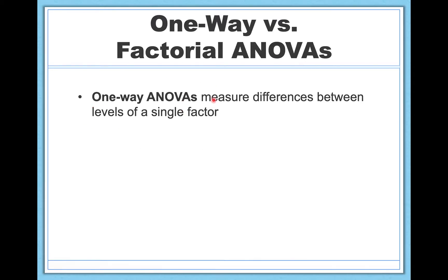What I've been referring to — this example with political affiliation — is a one-way analysis of variance. One-way ANOVAs measure differences between levels of a single factor. Single factor basically means one-way.